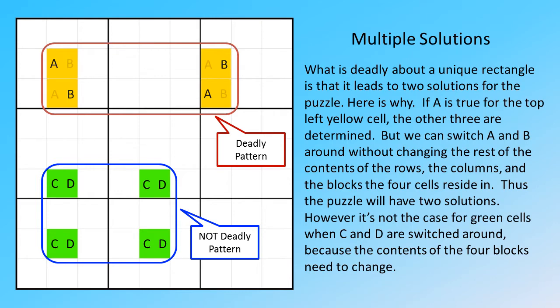But we can switch A and B around without changing the rest of the contents of the rows, the columns, and the blocks the four cells reside in. Thus the puzzle will have two solutions. However, it's not the case for the green cells when C and D are switched around, because the contents of the four blocks need to change.